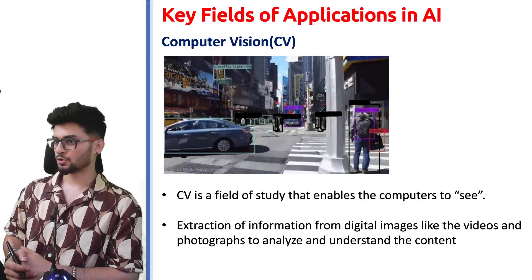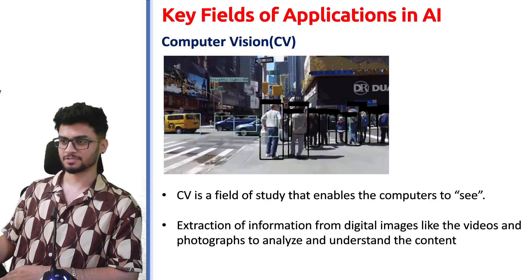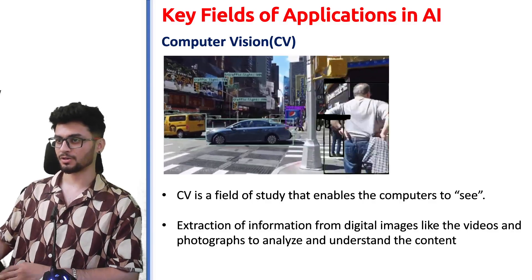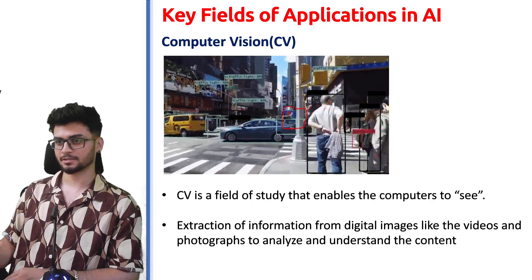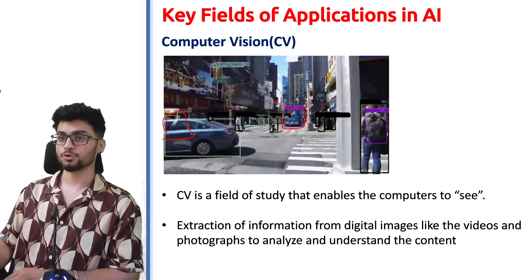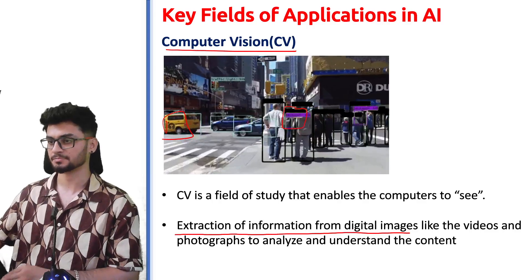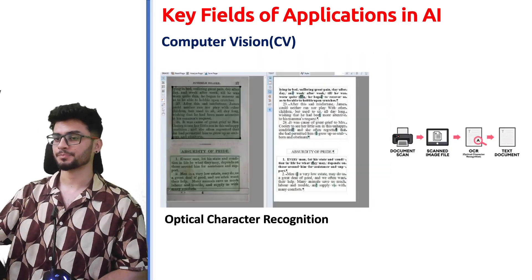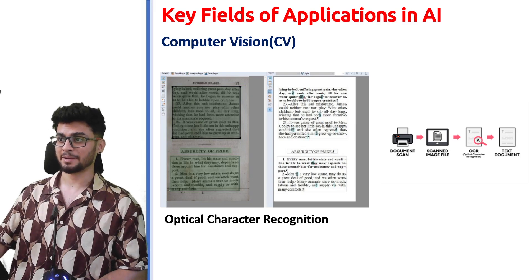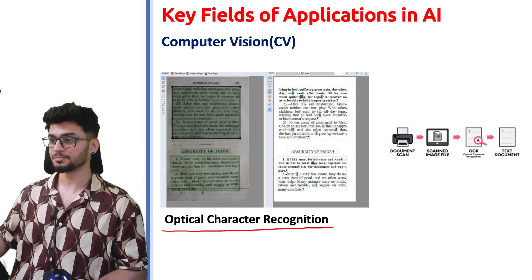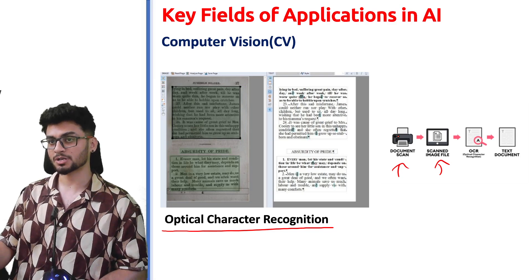Now let's talk about computer vision. Imagine a camera taking a video of a New York road — it detects what it sees by drawing boxes around each detected area and identifying what kind of object it is. Using computer vision, a computer is able to see images and extract information from digital images like videos and photographs. Applications include scanning documents using optical character recognition (OCR), where each character is extracted and a PDF is generated, and also fingerprint recognition.